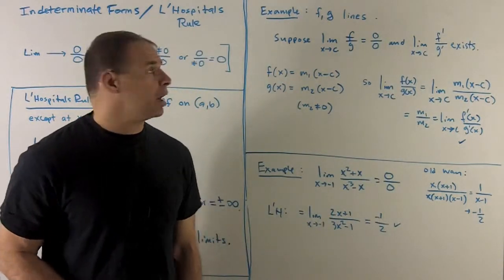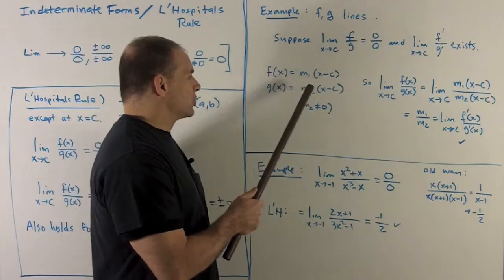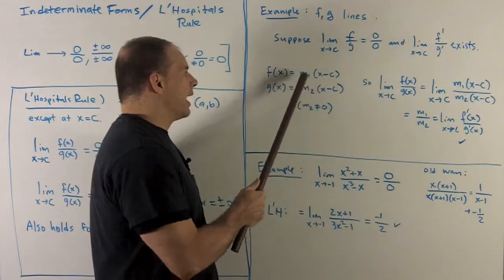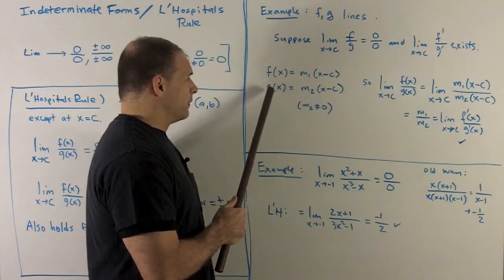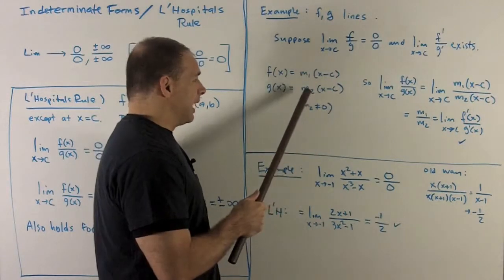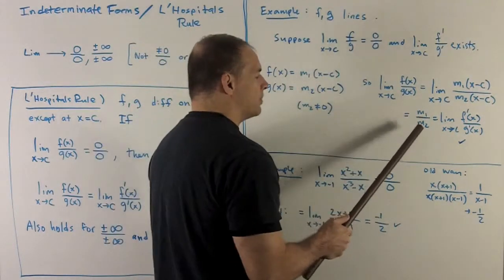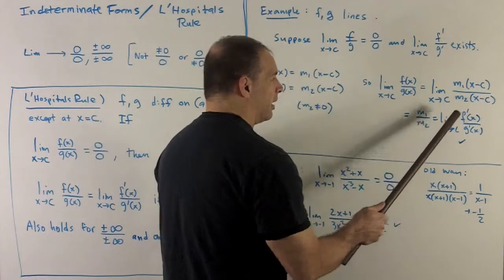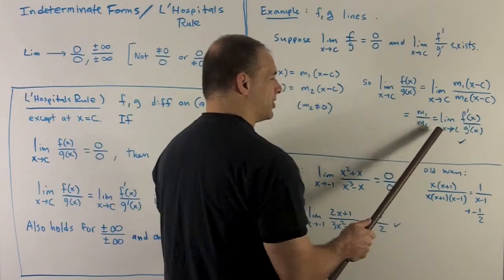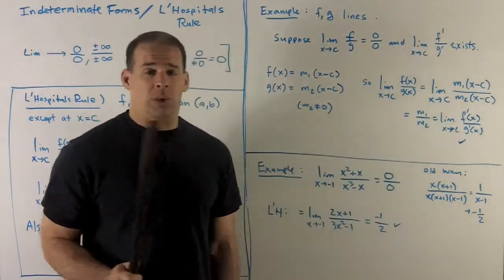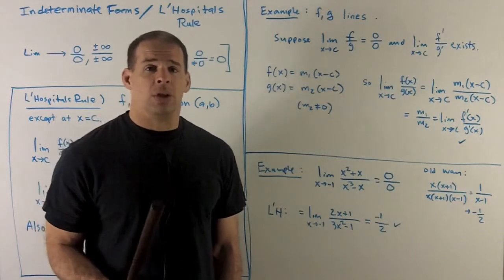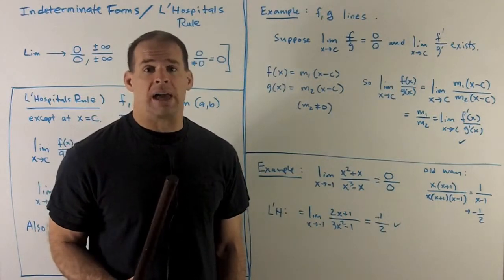Let's take a look at what the derivatives are. The derivative of f is just going to be m1. Derivative of g, same idea, it's going to give me m2. So m1 over m2 is also equal to the limit of f prime over g prime as x goes to c. So we note, L'Hopital's rule certainly works when we look at two lines.